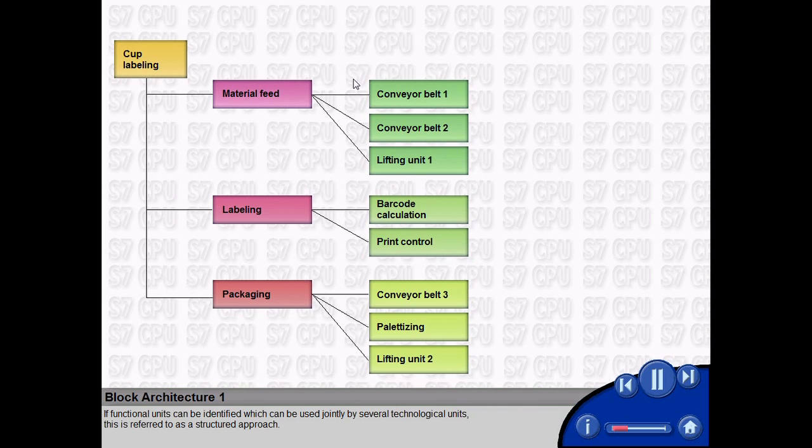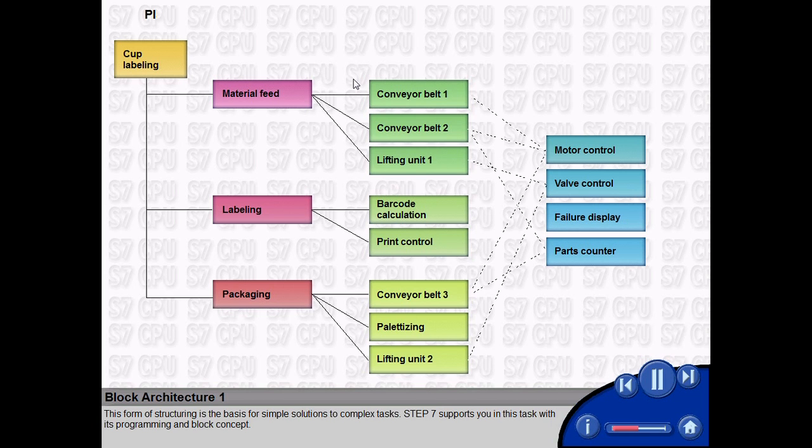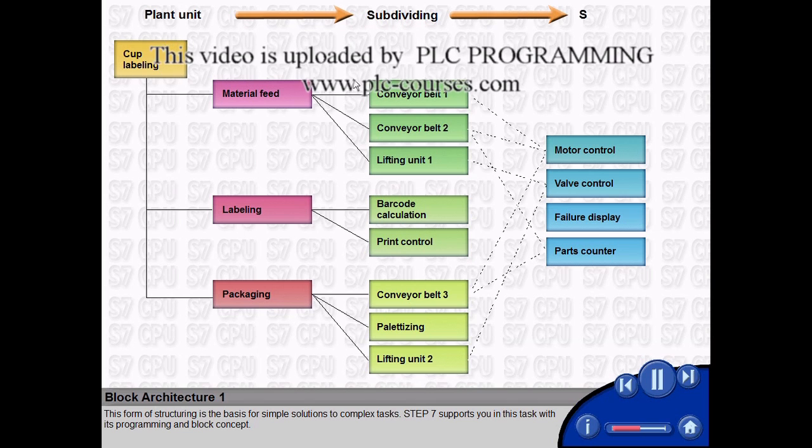If functional units can be identified which can be used jointly by several technological units, this is referred to as a structured approach. In this example, this could, amongst many others, be a motor control, valve control, failure display, or part load count. This form of structuring is the basis for simple solutions to complex tasks.